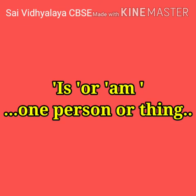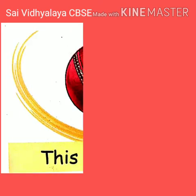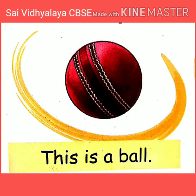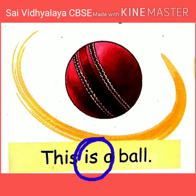Is is used when we talk about one person or thing, and also with he, she, it. Here's an example: What is this? Yes, this is a ball. A ball is only one thing, so we use is — this is a ball.